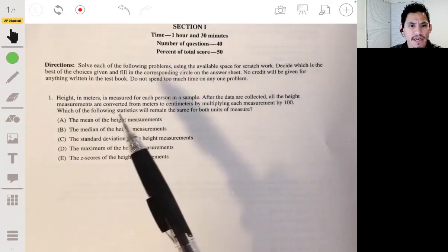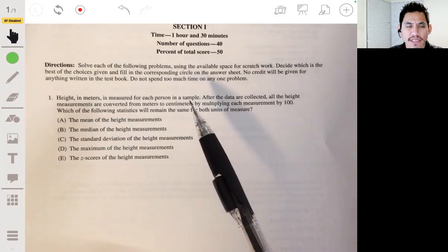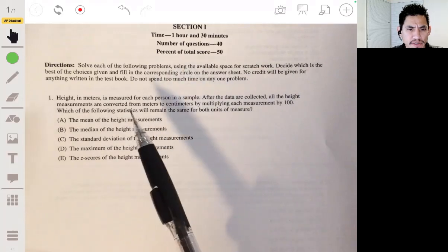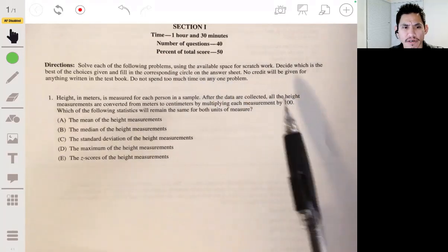All right, so number one. It has the height in meters measured for each person in a sample. After the data are collected, all the height measurements are converted from meters to centimeters by multiplying each measurement by 100.